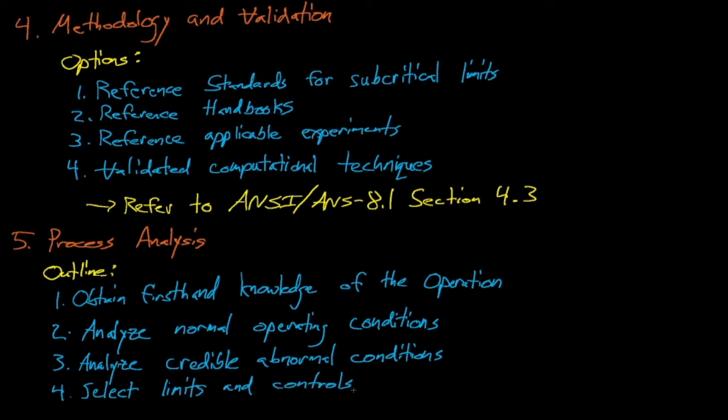A criticality safety evaluation considers many factors in the analysis of normal and credible abnormal conditions, including operating limits, physical and chemical conditions of fissionable material, and equipment failures. Things like whether the fuel is in a solid or liquid form affect what credible accident conditions are possible. A well-prepared CSE relies on controllable factors for establishing limits. As discussed earlier, a passive control is preferable to an active control, which is then preferable to an administrative control.